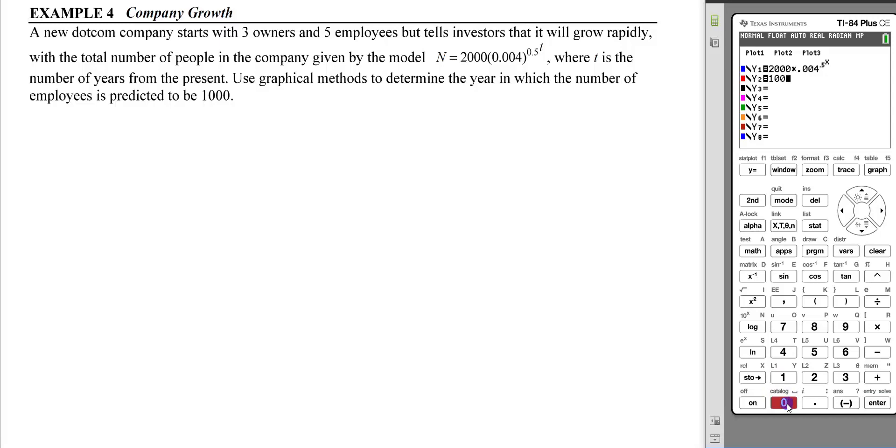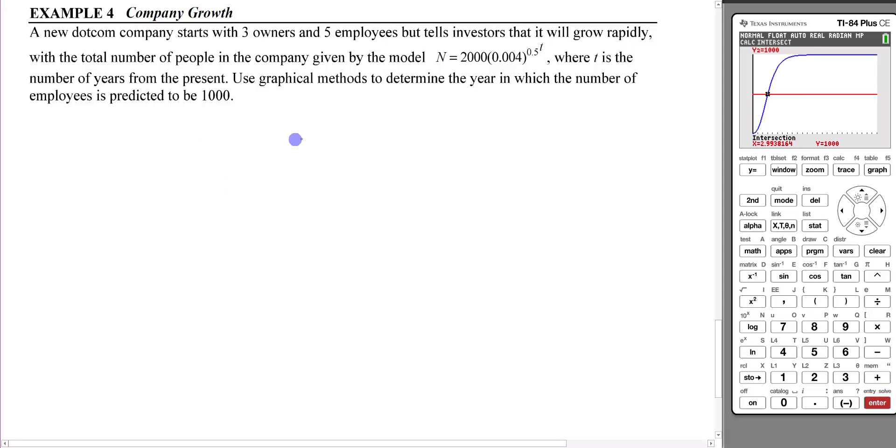Go to the equation editor and put the function in: 2000 times 0.004^(0.5^x). The 1000 is a y value, so make another y = 1000. Let's set our window from 0 to 25 years and do a zoom fit. We see the intersection, so we can calculate it. You get 2.99, so it'll be 3 years from now. In 3 years the number of employees will be 1000. You can see from the model that the maximum number of employees will be 2000 eventually.